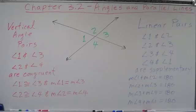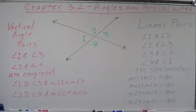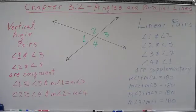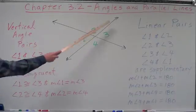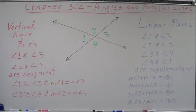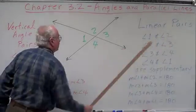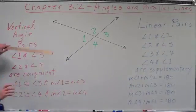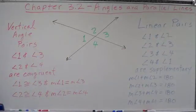Before we go on from Section 3.1, Parallel Lines and Transversals, I want to go back and revisit some things we did earlier in the year on two intersecting lines. When two lines intersect, they obviously create four angles. Those angles have relationships — some of those angles are linear pairs, and some of them are vertical angle pairs.